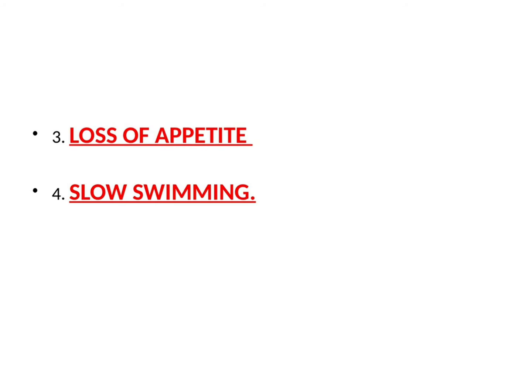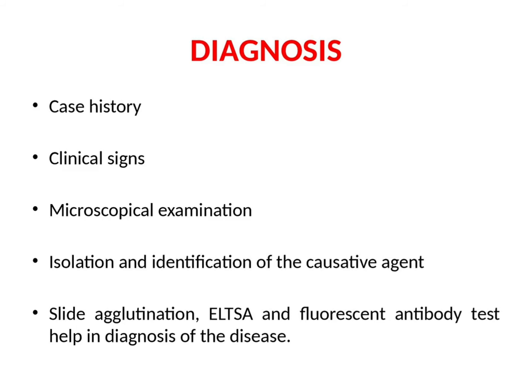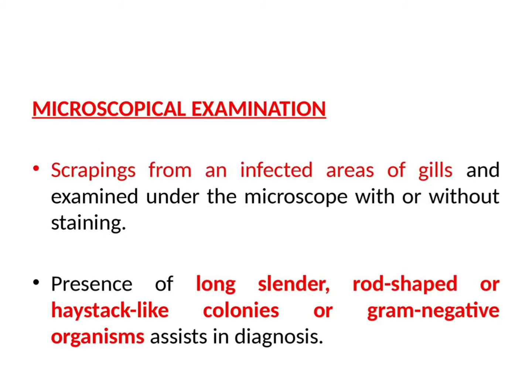Now let's see the diagnosis of columnaris disease. This is based on case history, clinical signs, and microscopical examination — which is very important — as well as isolation and identification of the causative agent. Slide agglutination, ELISA, and fluorescent antibody test also help in the diagnosis of the disease. Now let's see the microscopical examination in a little detail. Scrapings from an infected area of gills are examined under the microscope with or without staining.